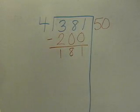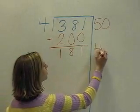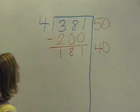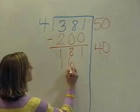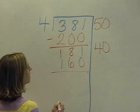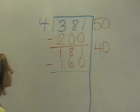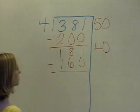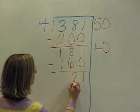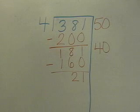Now I ask myself, how many times will 4 go into 181? I know it will go in at least 40 times. 40 times 4 is 160. Now I subtract 181 minus 160. Now I have 21.